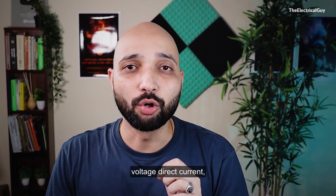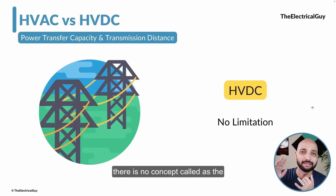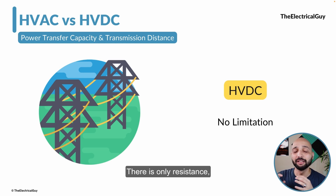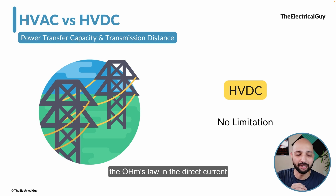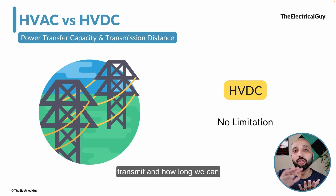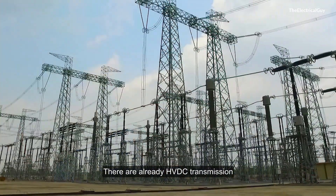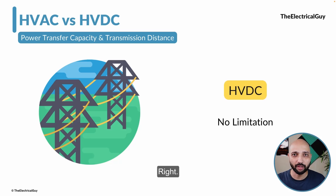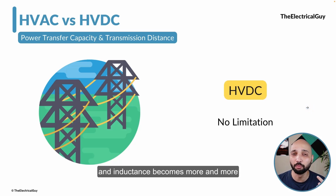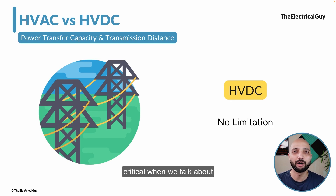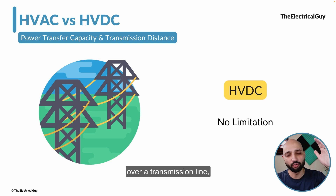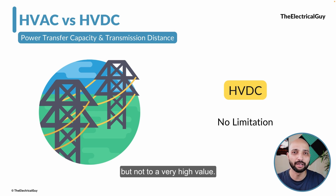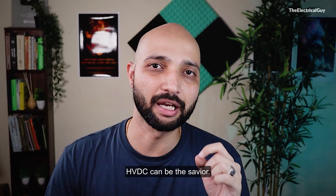When we talk about high voltage direct current, there is no concept of capacitance or inductance in HVDC — only resistance, governed by Ohm's law. Technically there is no limitation on how much power we can transmit or how far. There are already HVDC transmission lines transmitting power over 1000–2000 km without any issue. This problem of capacitance and inductance becomes even more critical in cables compared to overhead transmission lines, and in that case HVDC can be the savior.